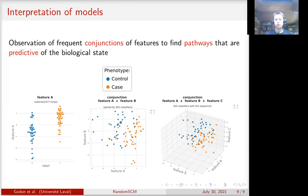The model is composed of an ensemble of conjunctions of rules based on features. We can then count the number of times some features appear together in the same conjunction.